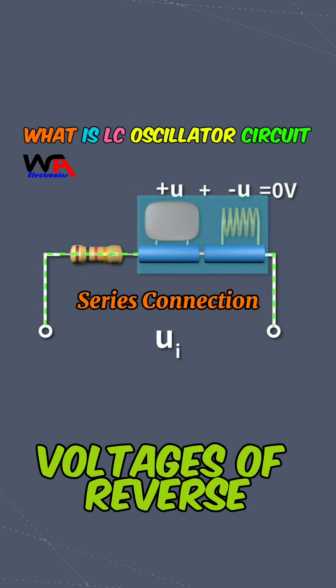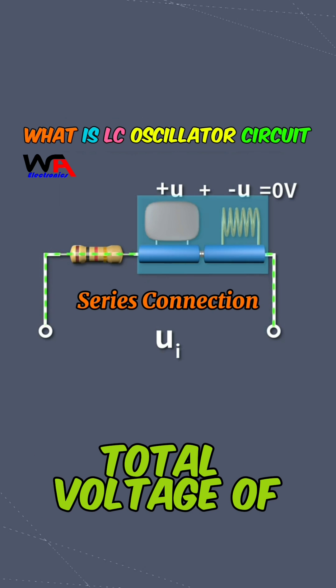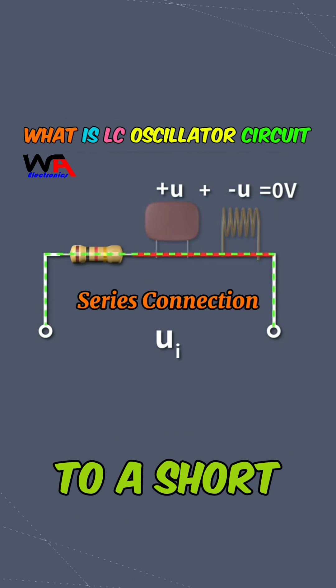This is analogous to how the voltages of reverse biased batteries cancel each other out, resulting in a total voltage of zero volts, which is equivalent to a short circuit.